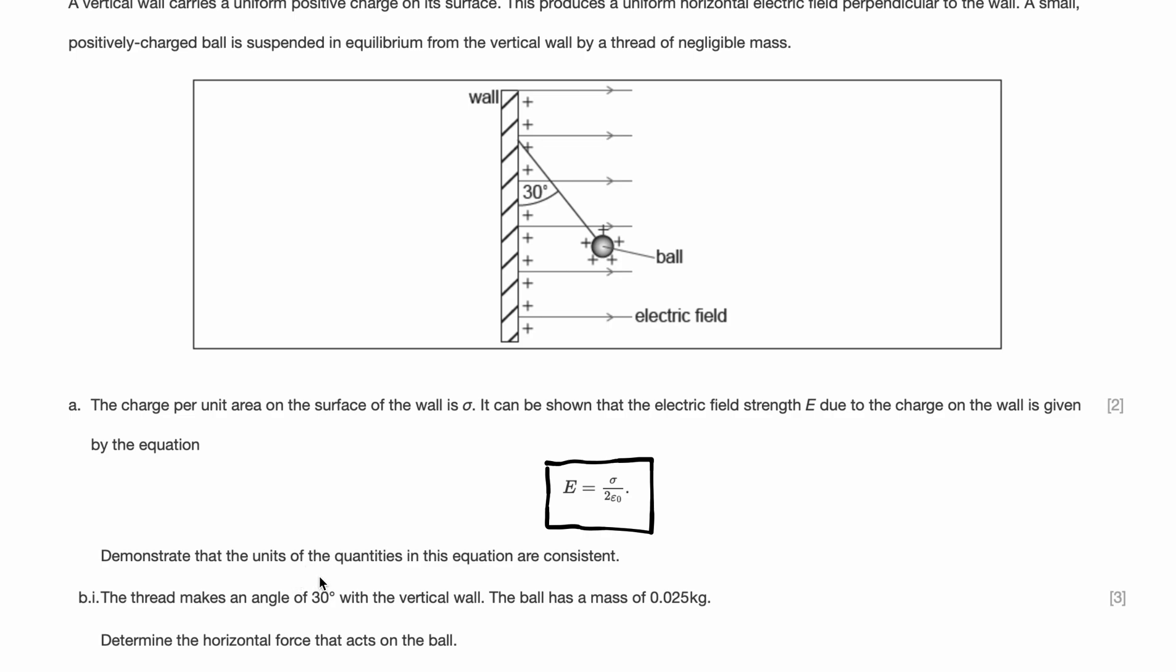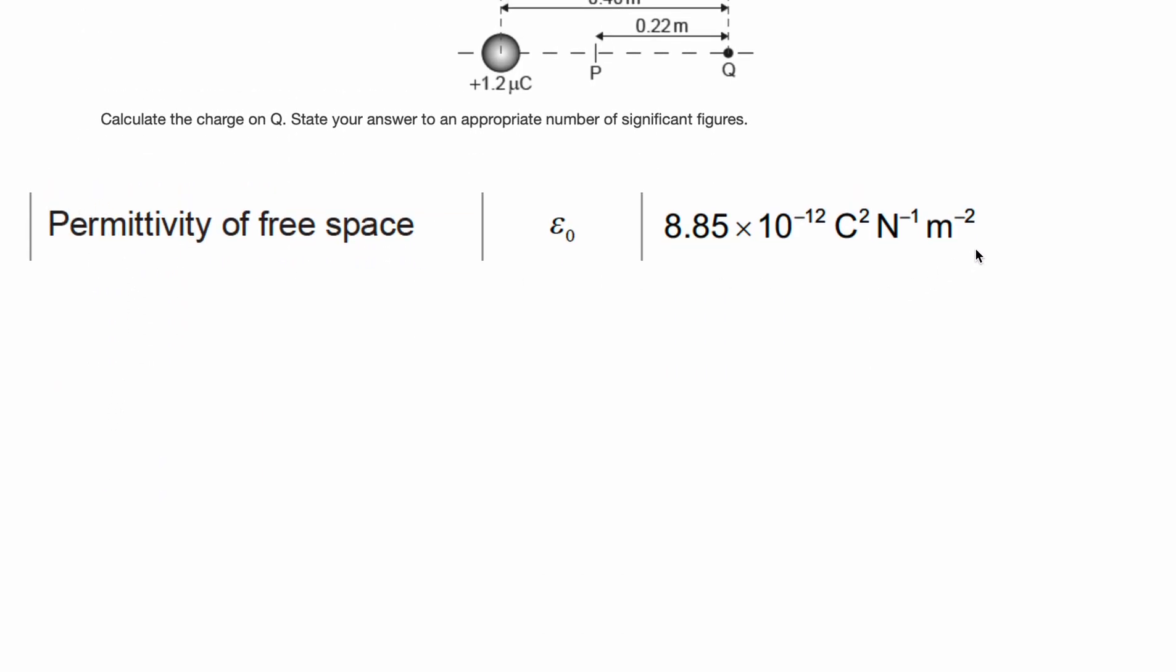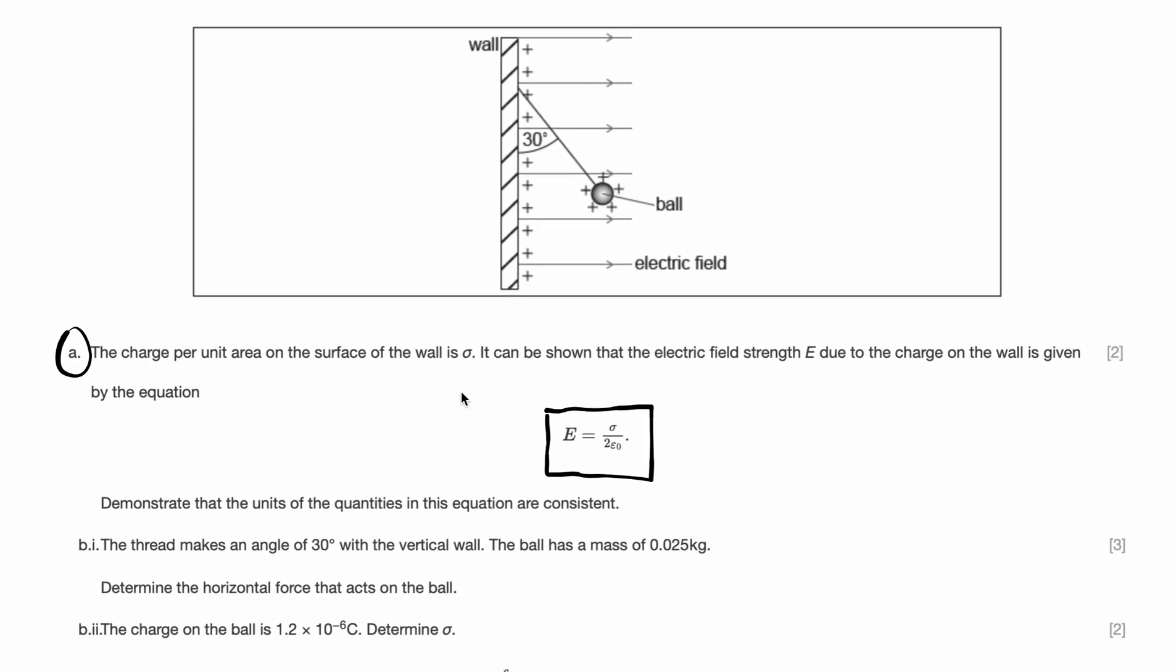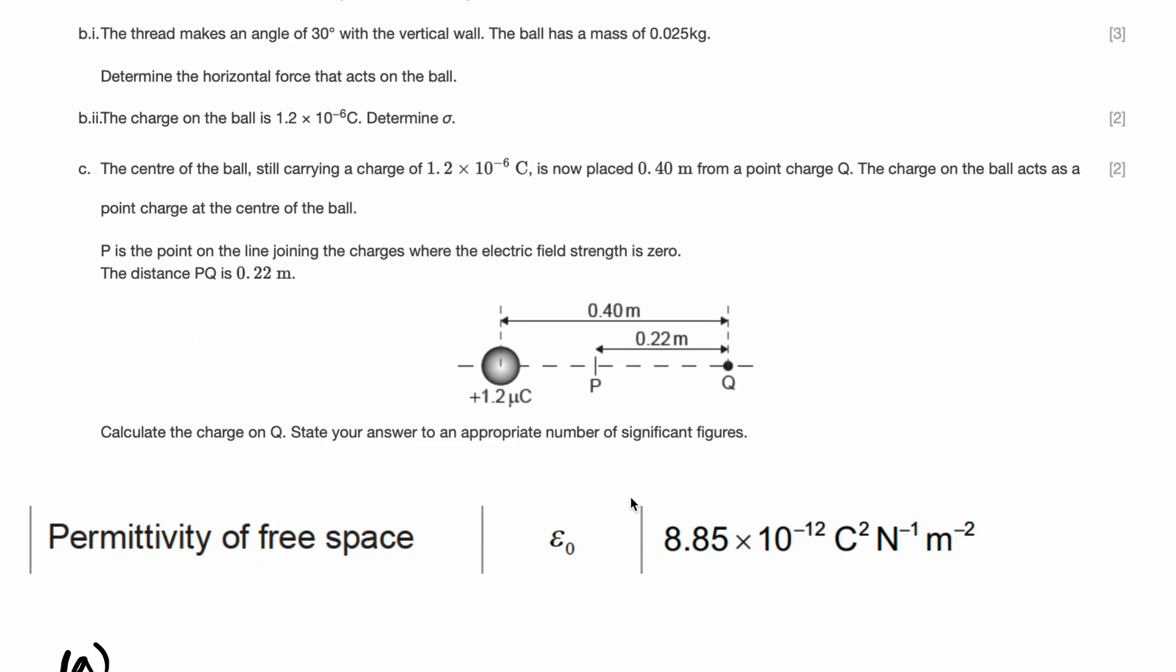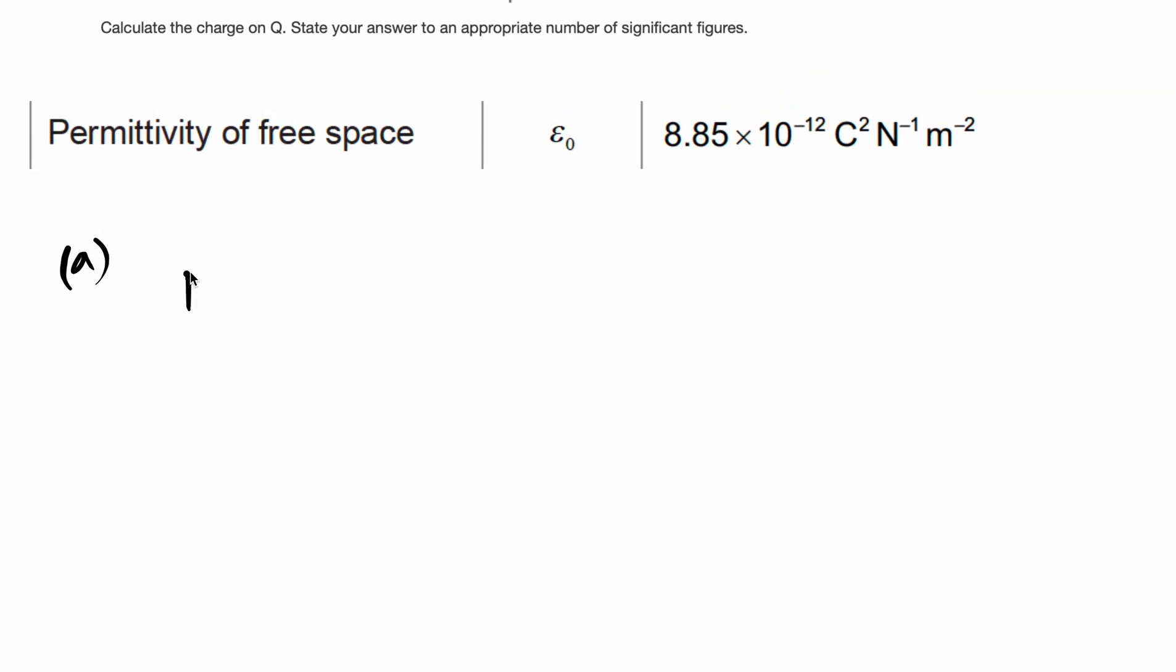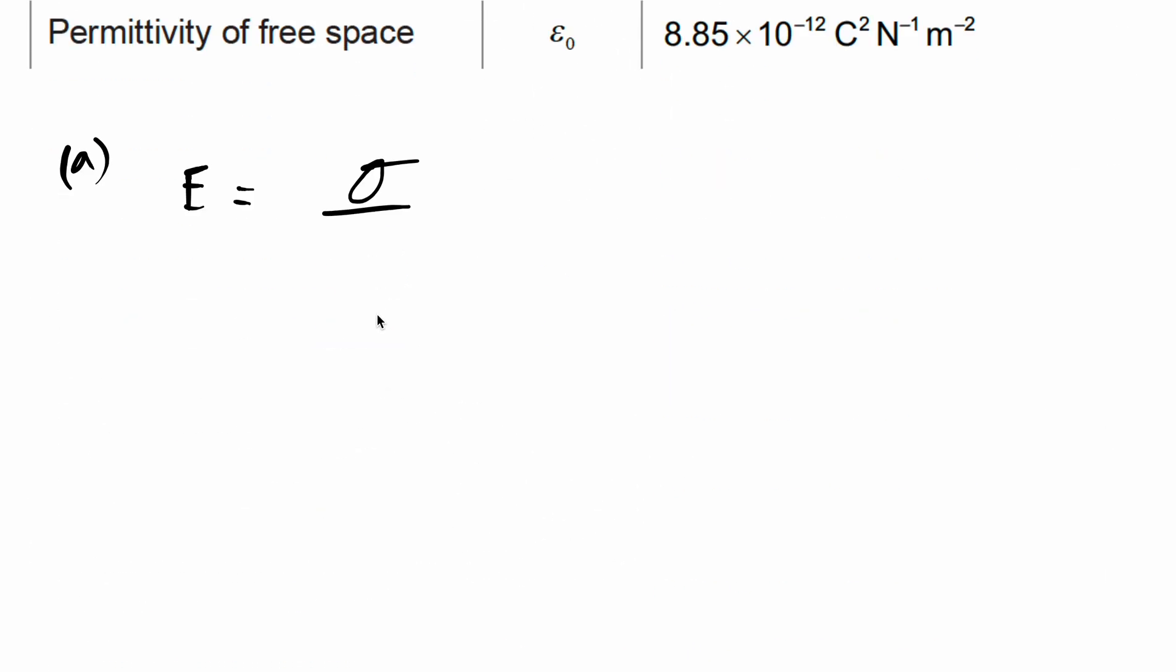They're asking us to demonstrate that the units of the quantities in this equation are consistent. Part A, let's go part by part. And here I've linked a relevant section from the data booklet, IB data booklet, which we can use. So let's also refer to your data booklets when solving this question. They're asking us to show that the units are consistent, meaning are the units of the left hand side equal to the units of the right hand side.